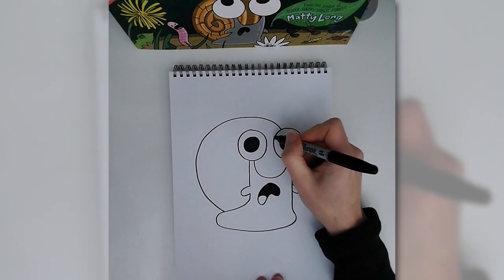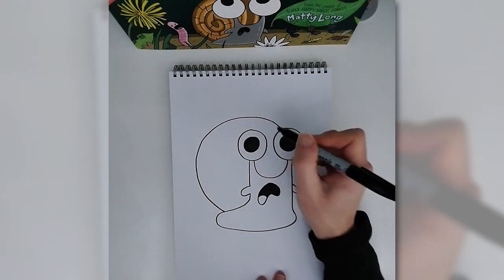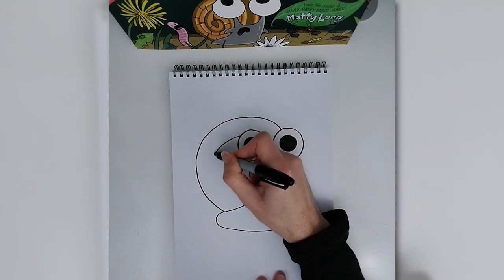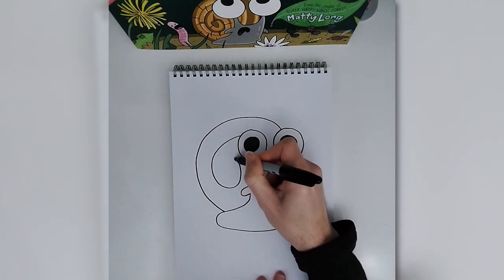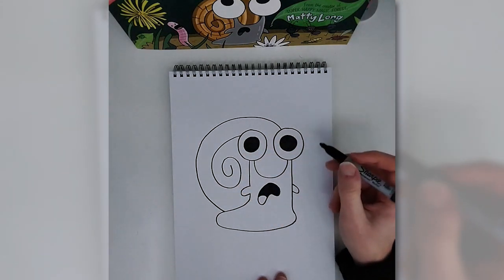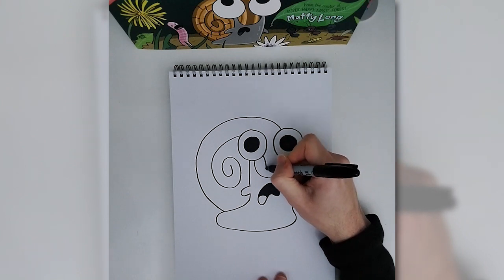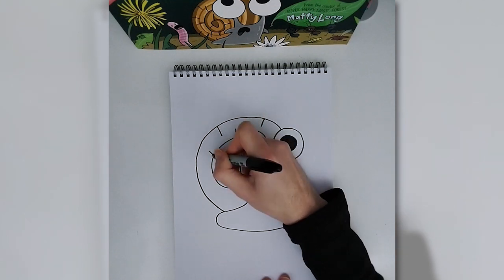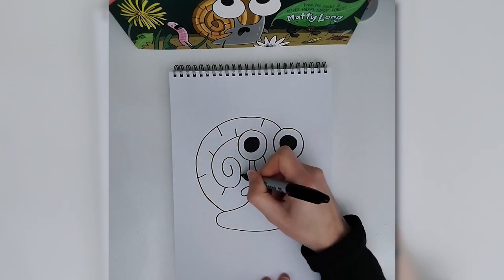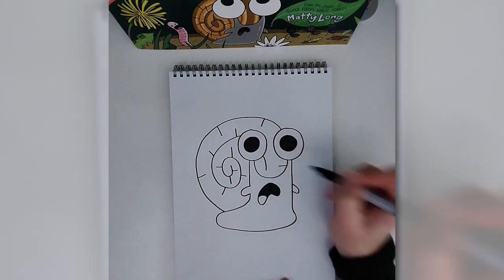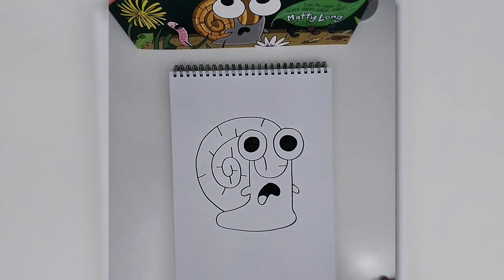So that is snail's face filled in. We just need to add some detail to the shell. I'm going to start about here and just take a line out, but I just spiral inwards like that and it can probably come down there and just add a few lines for that sort of helix effect. And there we have it. That is how I draw snail from Who Ate All the Bugs. And we'll see you guys.